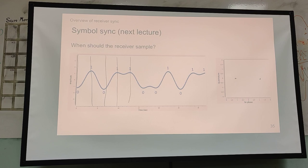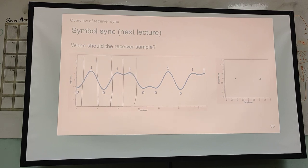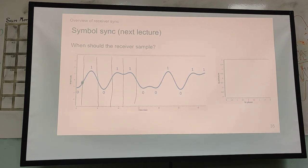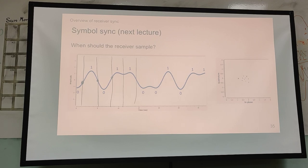What happens if you choose samples that are just slightly offset? Instead of being negative 1, it'll be like negative 0.8, and then the second symbol will be close to 0 — so we might have a cloud of points that don't align with our ideal constellation. We will fix this in the next lecture.